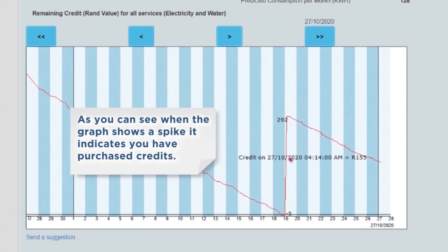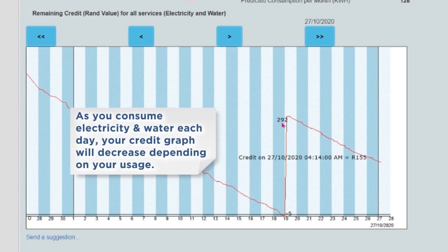The graph below is your remaining RAND value credit graph. As you can see, when the graph shows a spike, it indicates you have purchased credit. As you consume electricity and water each day, your credit graph will decrease depending on your usage.